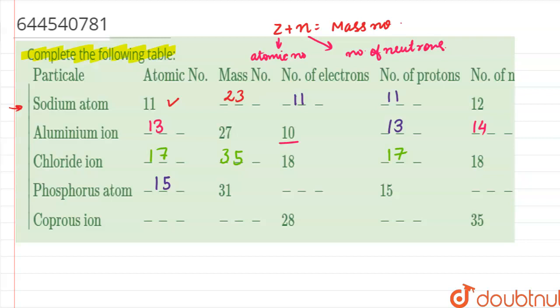For the phosphorus atom, the atomic number is 15 and the mass number is 31. This means the number of neutrons is 31 minus 15, which equals 16. The number of electrons is 15, since phosphorus is a neutral atom.